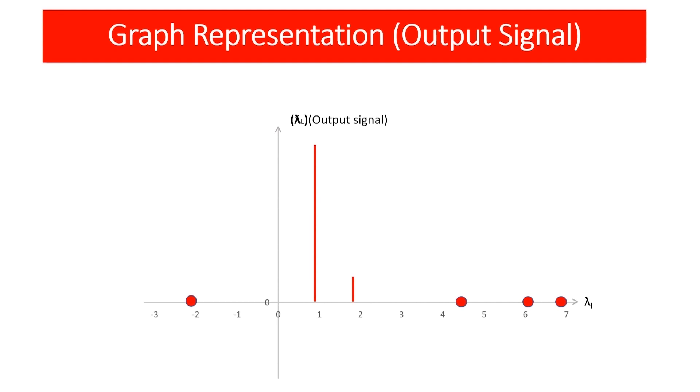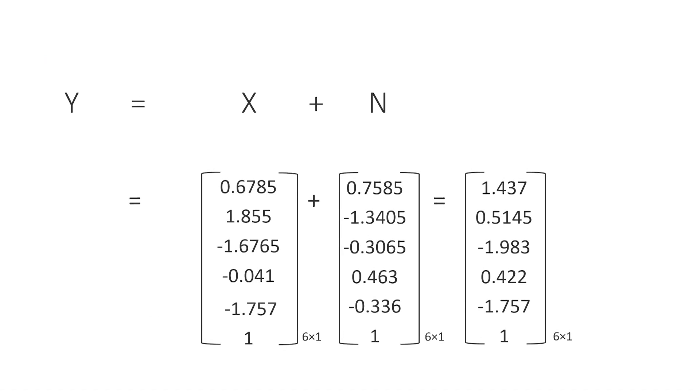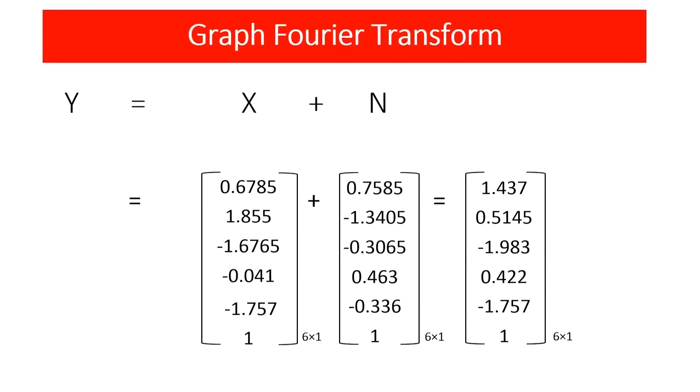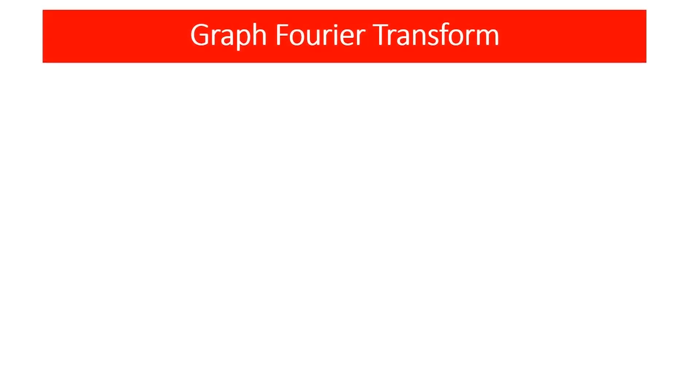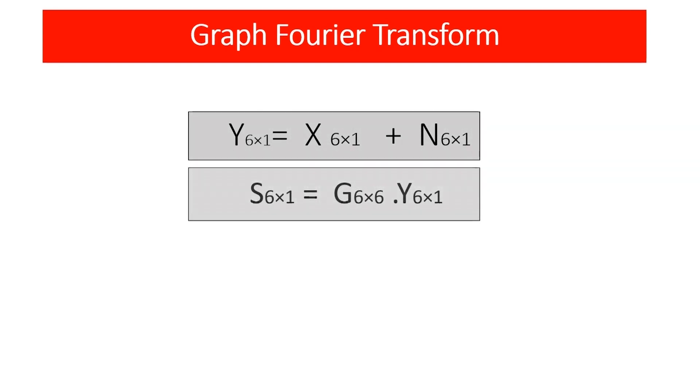Until now we have done graph filtering by applying Fourier transformation to graph signals. Now let's shortly see a mathematical way to do graph filtering in the graph domain. We have received signal y, to get the noiseless signal we have to multiply the received signal y by a filter matrix. The output signal s from the multiplication process is approximately equal to the generated signal x.